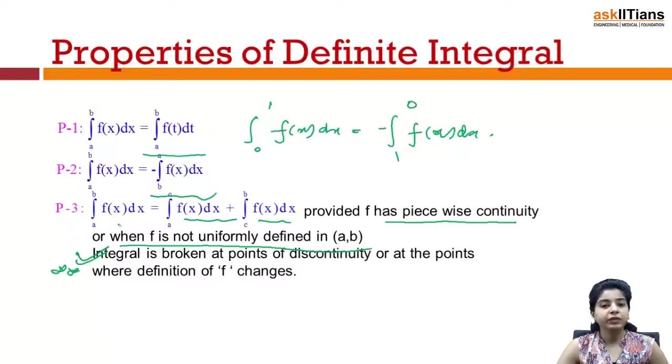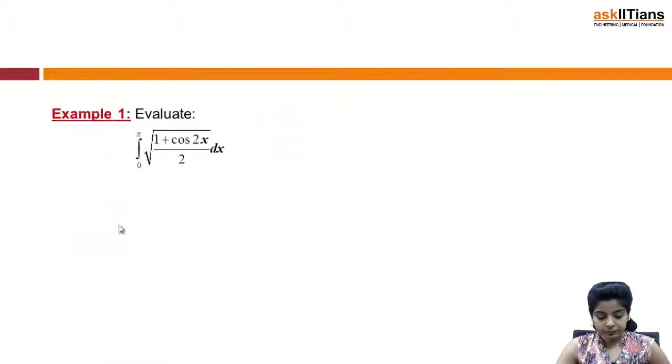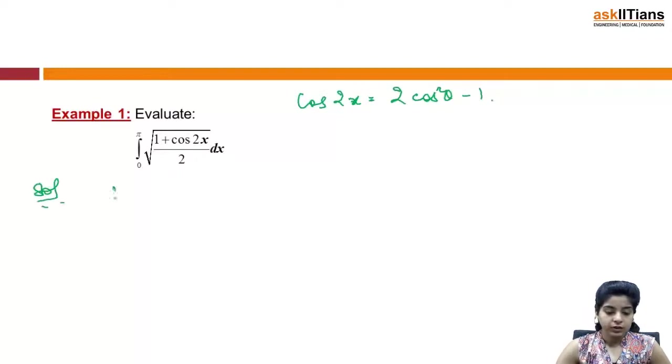Let us discuss a question based on these properties. Evaluate integral 0 to pi of square root of (1 plus cos 2x)/2 dx. Now if you remember, cos 2x can be written as 2 cos squared x minus 1.